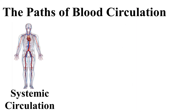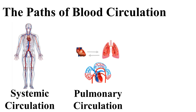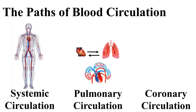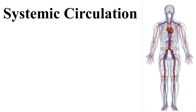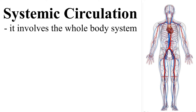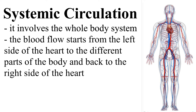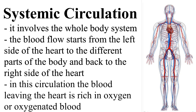The paths of blood circulation include Systemic circulation and Pulmonary circulation. Systemic circulation involves the whole body system. The blood flow starts from the left side of the heart to the different parts of the body and back to the right side of the heart. In this circulation, the blood leaving the heart is rich in oxygen, or oxygenated blood.